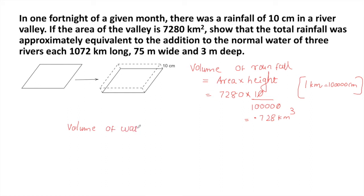Now we can find out the volume of water in rivers. Each river has the dimensions of 1072 kilometers long, 75 meters wide, and 3 meters deep. And there are three rivers.